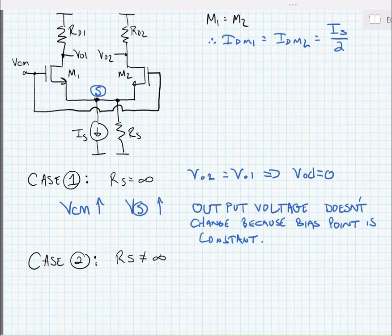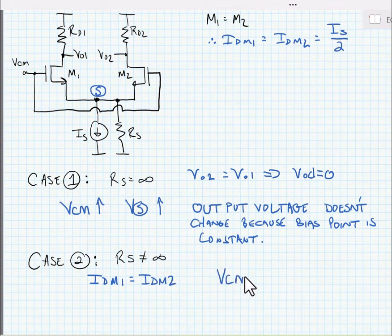Next, let's look at the case where RS is not equal to infinity. Here we have symmetry still, so we can still say that IDM1 is equal to IDM2. Let's see what happens when we increase the common mode voltage now. As before, when we increase the common mode voltage, the source voltage is going to increase. Essentially, we're increasing the gate voltage, so the source voltage is going to go up. But because we now have a finite amount of resistance in parallel with the current source, that change in voltage at the source will result in a change in current.